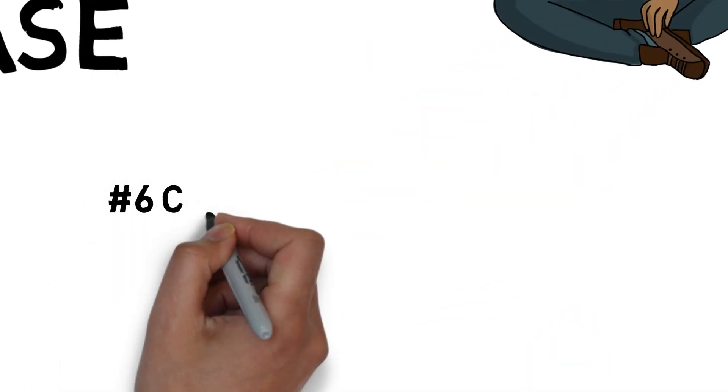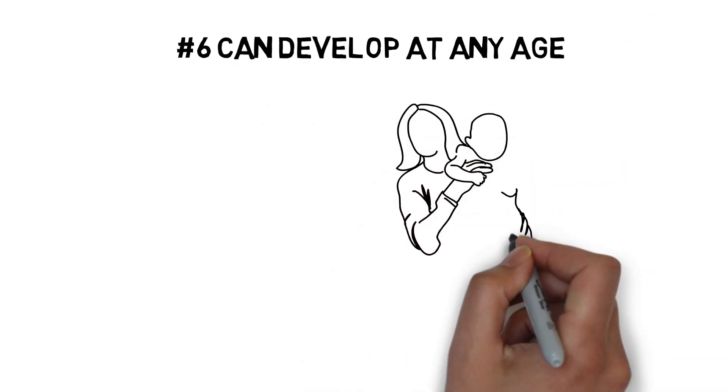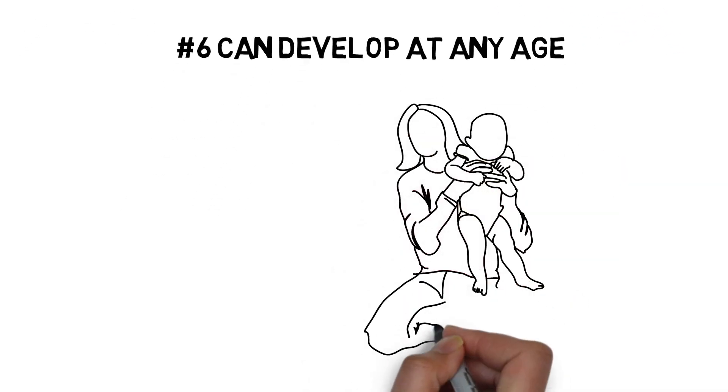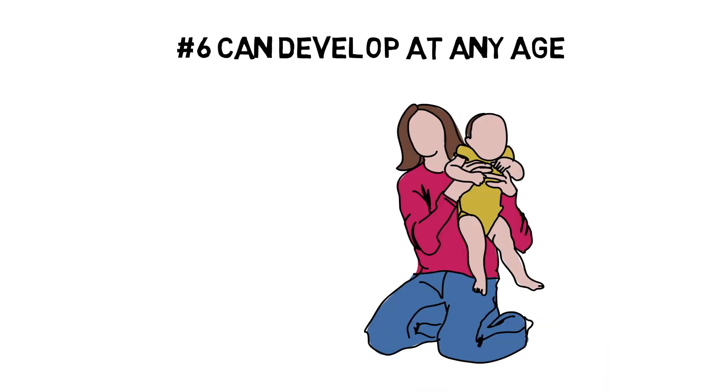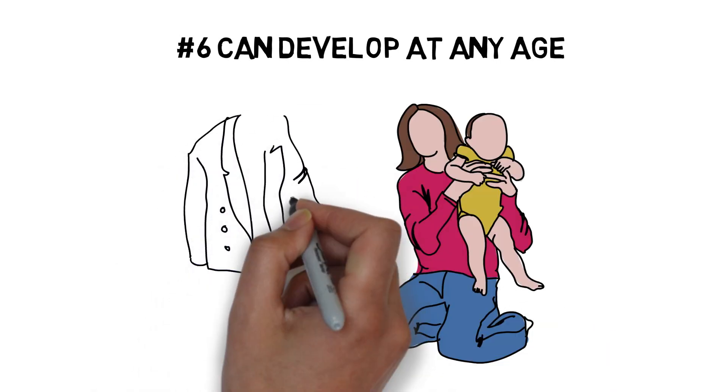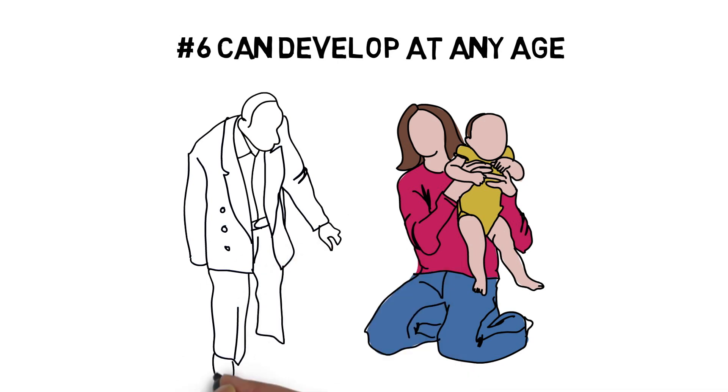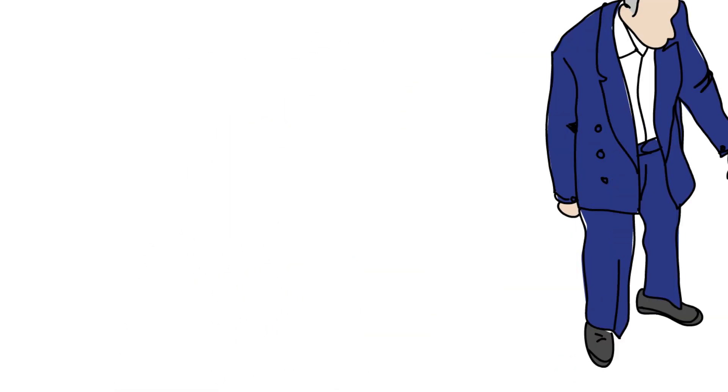Number 6. Celiac disease can develop at any age, not just when you're a child, as is commonly believed. You generally aren't born with celiac disease, it's something that develops as you age. In fact, in a recent study, it was shown that the elderly are at greatest risk for developing celiac disease.